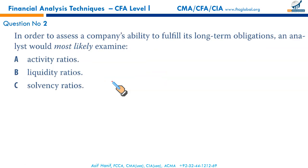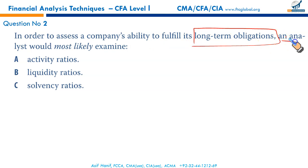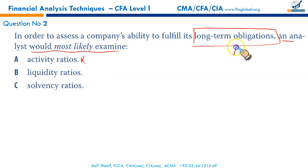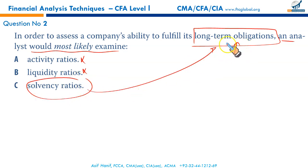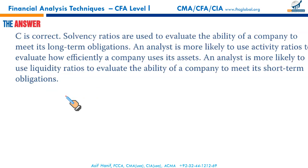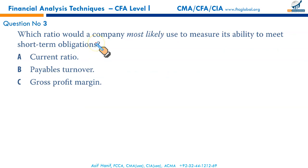Most of you got it correct. Next question: to assess a company's ability to fulfill its long-term obligations, an analyst would most likely examine what? Activity ratios calculate the usage of assets. Liquidity ratios measure the ability to pay short-term obligations. We measure long-term obligation ability through solvency ratios — that's why C is the right answer.